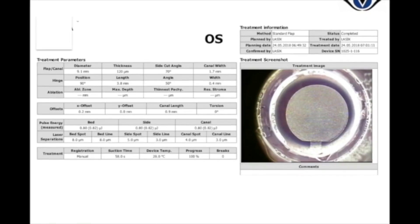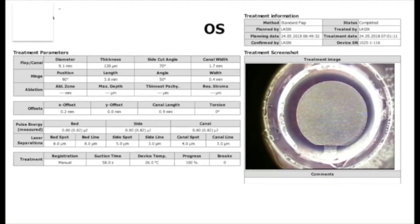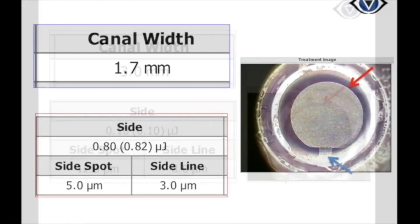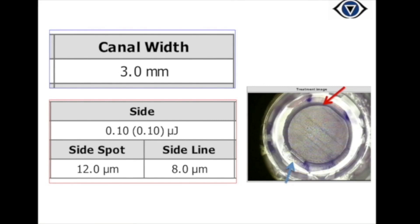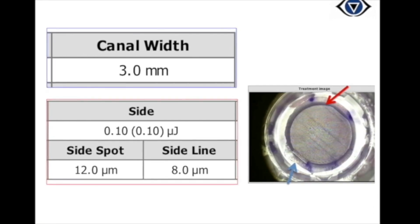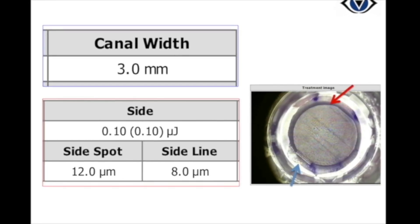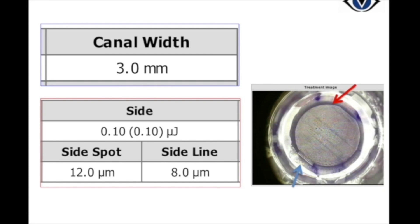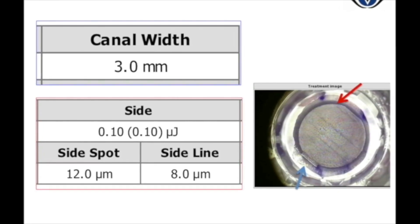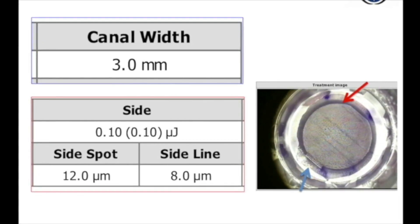For creation of the intra-stromal pocket, femtosecond LASIK flap-making software was used after making some changes. The energy of the side cuts was reduced to minimum so that there are no side cuts and the flap area gets converted into an intra-stromal pocket. The width of the canal used to release air bubbles in the LASIK flap is increased to 3 mm to engage the IOL injector for placing the inlay.